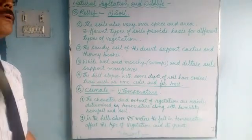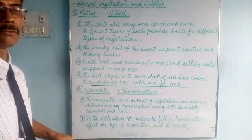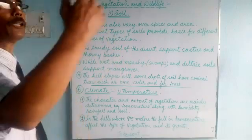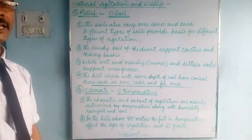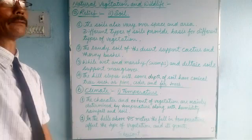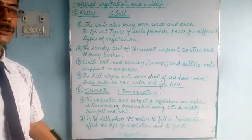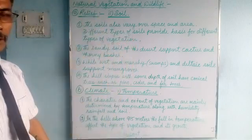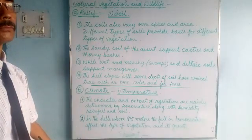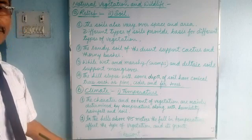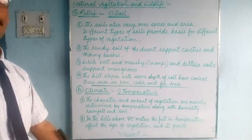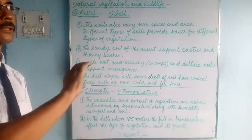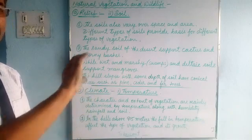At lower elevations you find dense evergreen forest. As you go higher, you find temperate forest, then coniferous forest, then grasslands. Just below the snowline you find lichens, and above that you won't find any plants at all. Below the lichens are grasses and meadows, then coniferous forest trees, then temperate forest, then tropical forest. In this way, you find distinct layers of vegetation as you climb a hill.